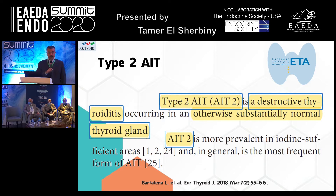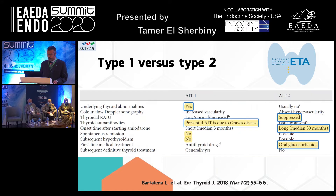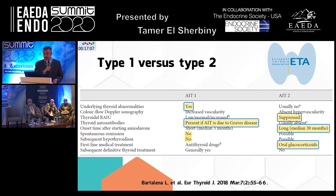Amiodarone-induced thyrotoxicosis type 2 is the most prevalent in iodine-sufficient areas. Egypt is an iodine-sufficient area, and in general it is the most frequently encountered type of amiodarone-induced thyrotoxicosis. Some patients present with a mixed or indefinite type with features of both. To differentiate type 1 from type 2, we focus on type 2 because this is the one we use glucocorticoids for. If there is no underlying thyroid abnormality, think of type 2.